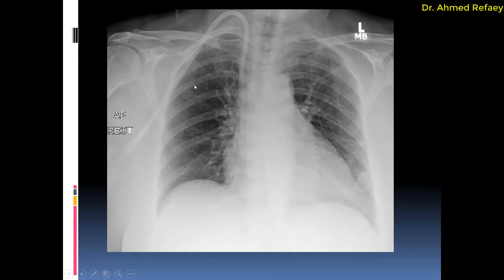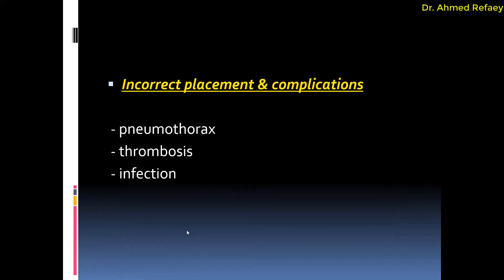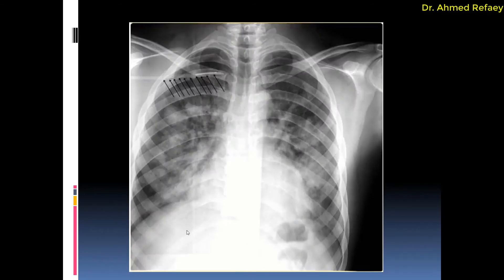This is an example of correct placement of a double lumen hemodialysis catheter or permacath — one tip in the region of the superior vena cava and the other in the right atrium. Regarding incorrect placement and complications: it can cause pneumothorax, thrombosis, and infection. This example shows malpositioning of the hemodialysis catheter, with its tip not reaching the superior vena cava, instead located in the right subclavian vein. That covers everything regarding intravascular catheters. In the next episode we will finish the remaining lines and tubes in the chest. Thank you very much.